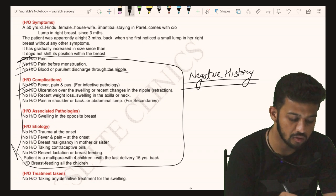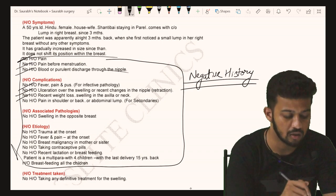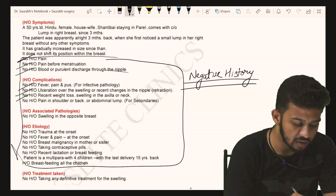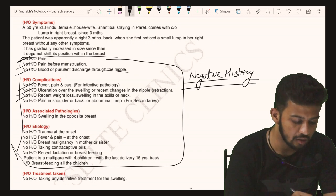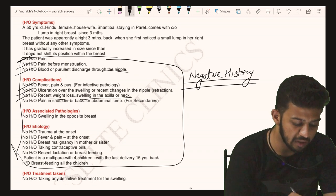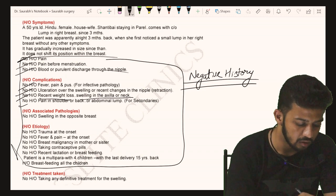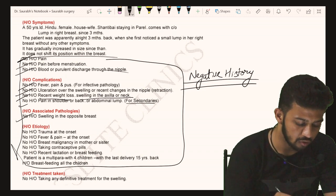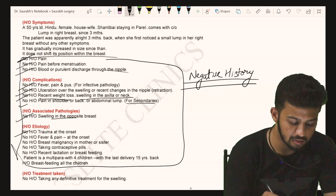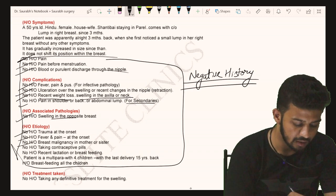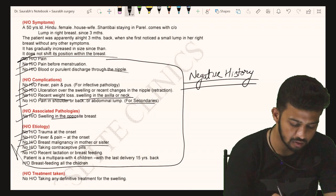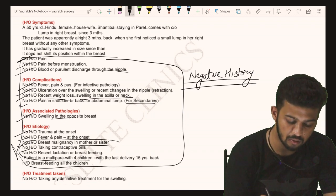No history of recent weight loss, swelling in the axilla or neck; no history of pain in the shoulder or back, or abdominal lump to rule out secondaries; no swelling in the opposite breast; no history of trauma; no history of fever; no history of breast malignancy in the mother or sister.